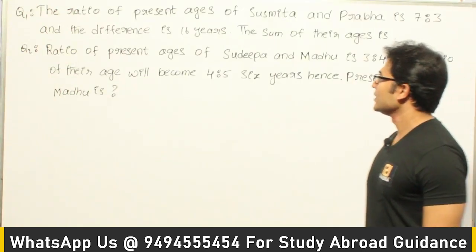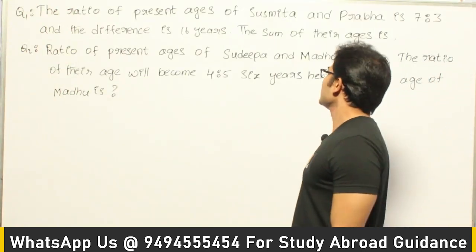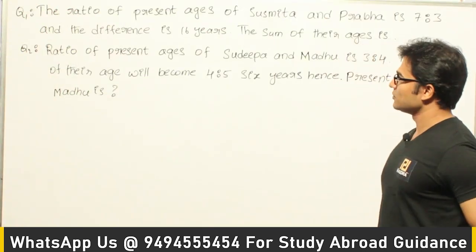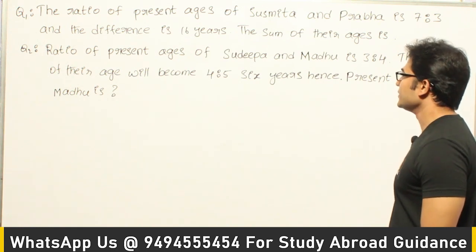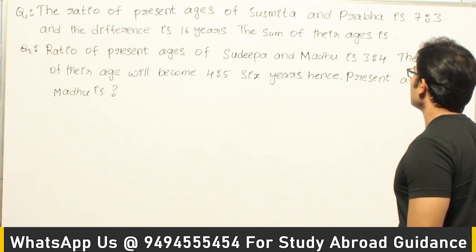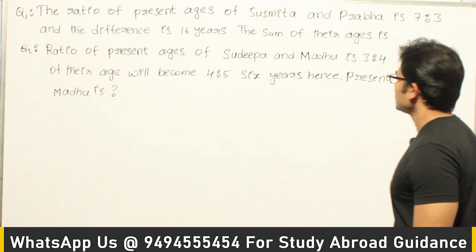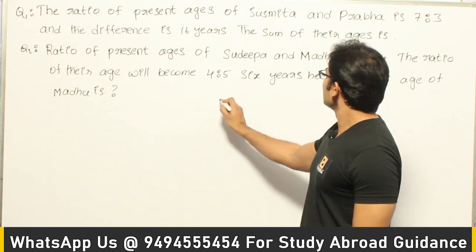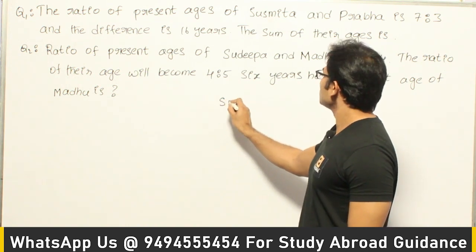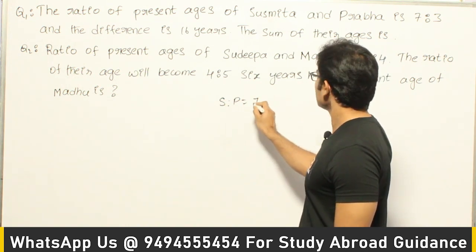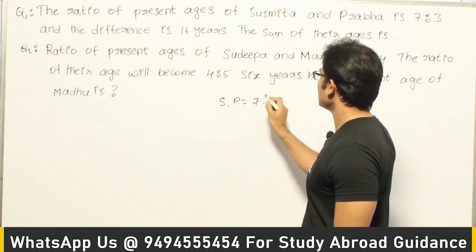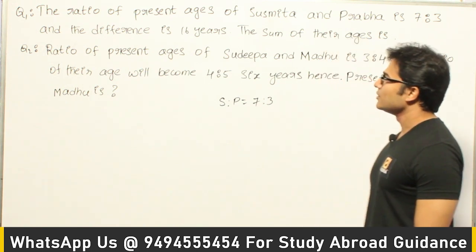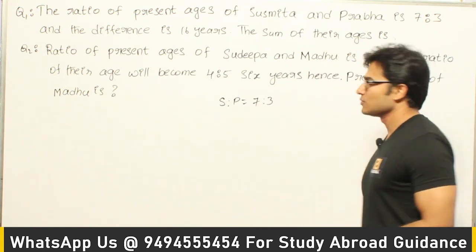Let's see this question. The ratio of present ages of Sushmita and Prabha is 7 is to 3, and the difference of their ages is 16. Then the sum of their ages is. So this question is on ratios. They are saying that Sushmita to Prabha ages are in the ratio 7 is to 3, and the difference of their ages is 16.